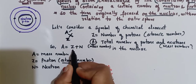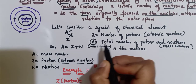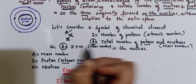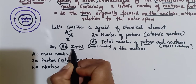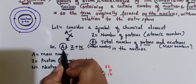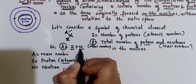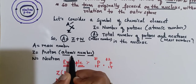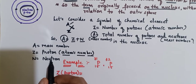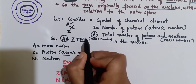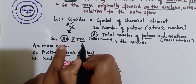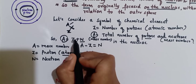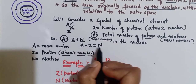The formula is A equals Z plus N. Total number of protons and neutrons: A equals protons (Z) plus neutrons (N). So A equals Z plus N — mass number equals number of protons plus number of neutrons. Here A is the mass number, Z is the atomic number, and N is the neutron count. If we need to calculate the total number of neutrons, the formula becomes N equals A minus Z.